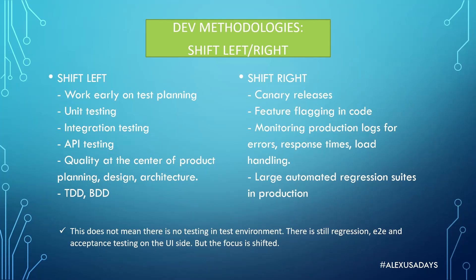Shift left and shift right are mostly DevOps terms, and there's a lot of talk about them in agile and DevOps, but they are also part of QA. If you work in a team trying to implement one of these approaches, as a QA engineer you'll have to participate and bring testing either more to the left or more to the right. Also, shifting left or shifting right doesn't mean there's no testing in the test environment — there will still be regression, end-to-end tests, and acceptance testing on the UI side in the actual test environment.